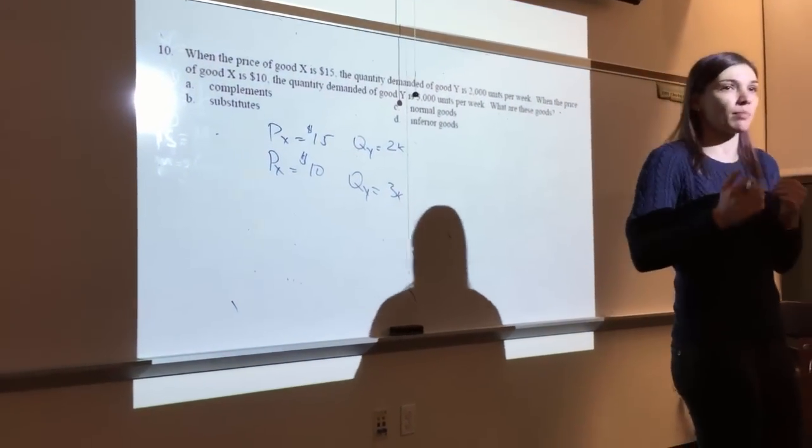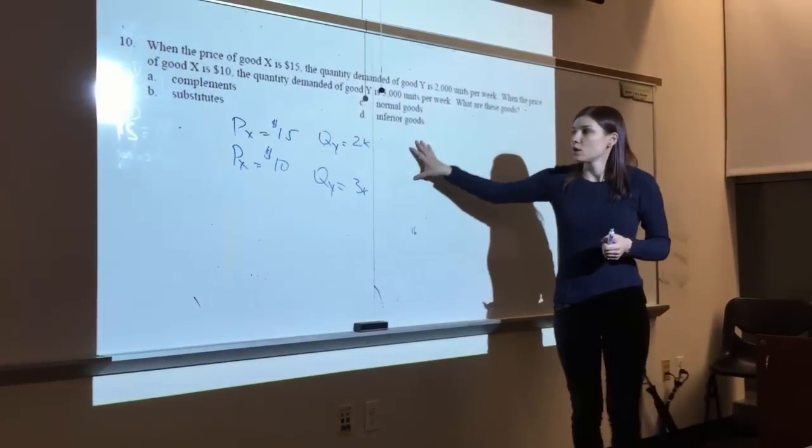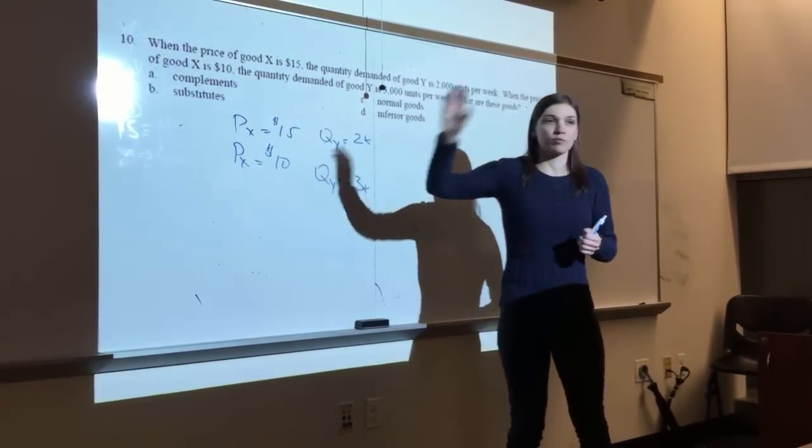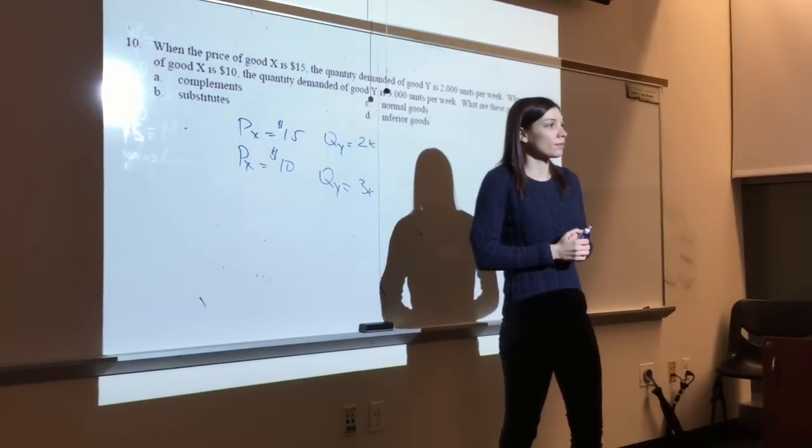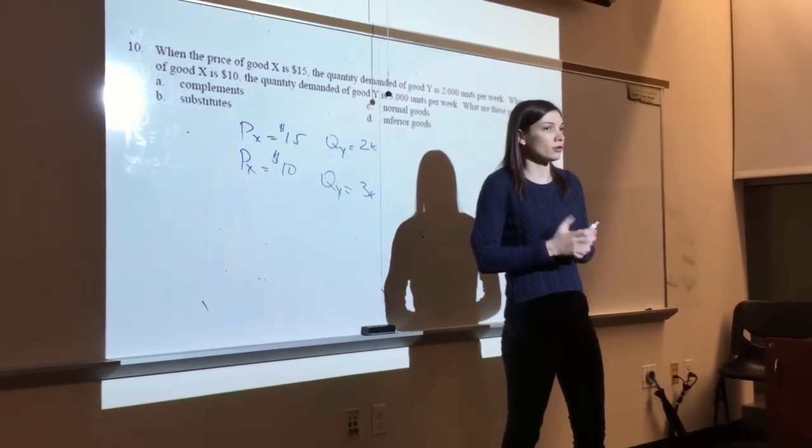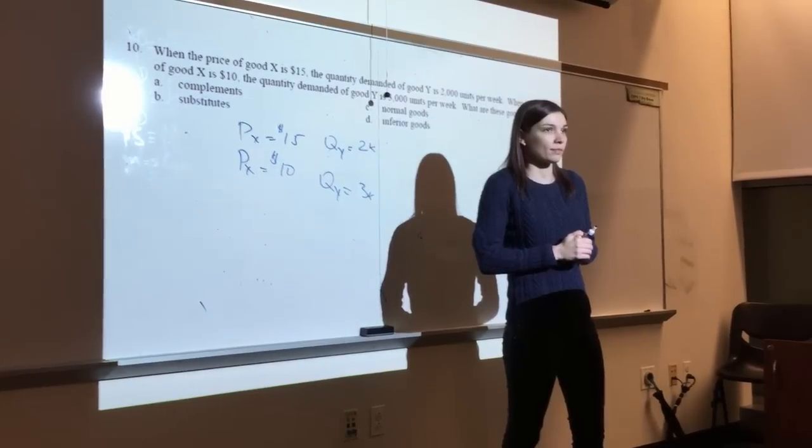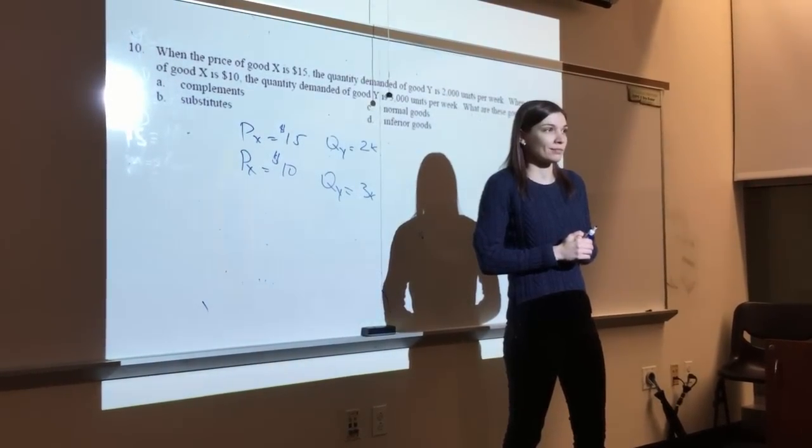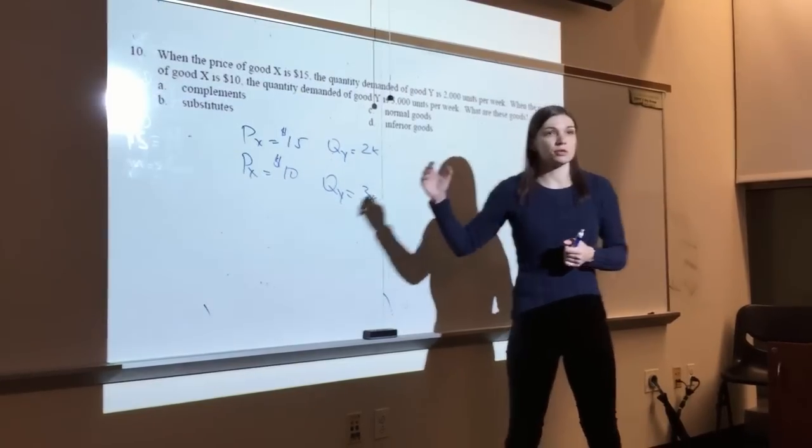So it's as income changes, what happens to quantity demanded of a certain good. What do we call the elasticity when we have price changing in one good and affecting the quantity of the other? What was the term for that? What type of elasticity? The cross-price elasticity. Right.